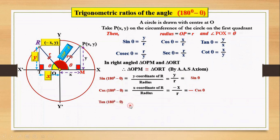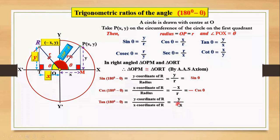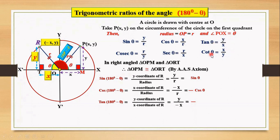Third ratio: tan(180° - θ). Its formula is y-coordinate of R by x-coordinate of R, which equals y by minus x. Y is the y-coordinate and minus x is the x-coordinate of R. Here also we copy minus as it is, and y by x is the ratio of tan theta. So we replace y by x with tan theta, giving tan(180° - θ) = -tan θ.